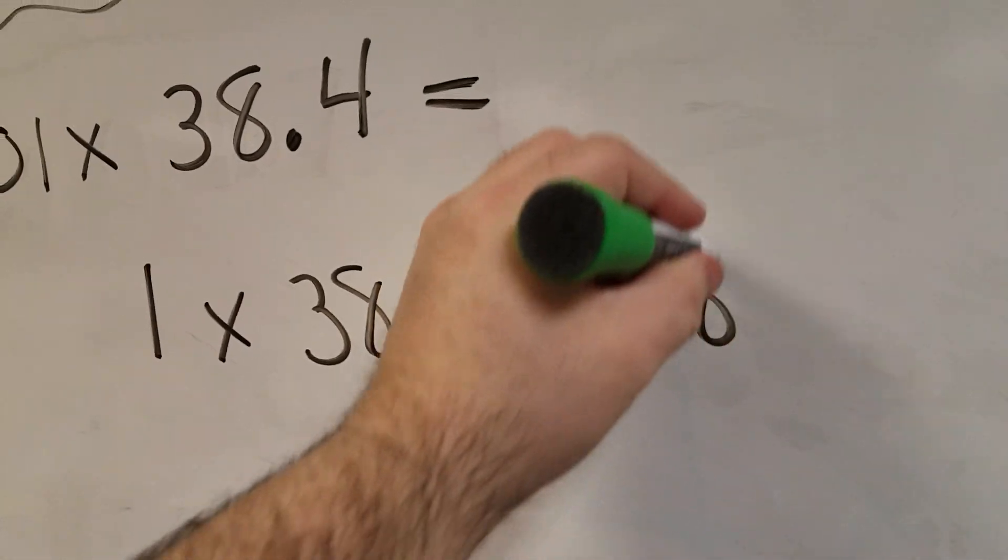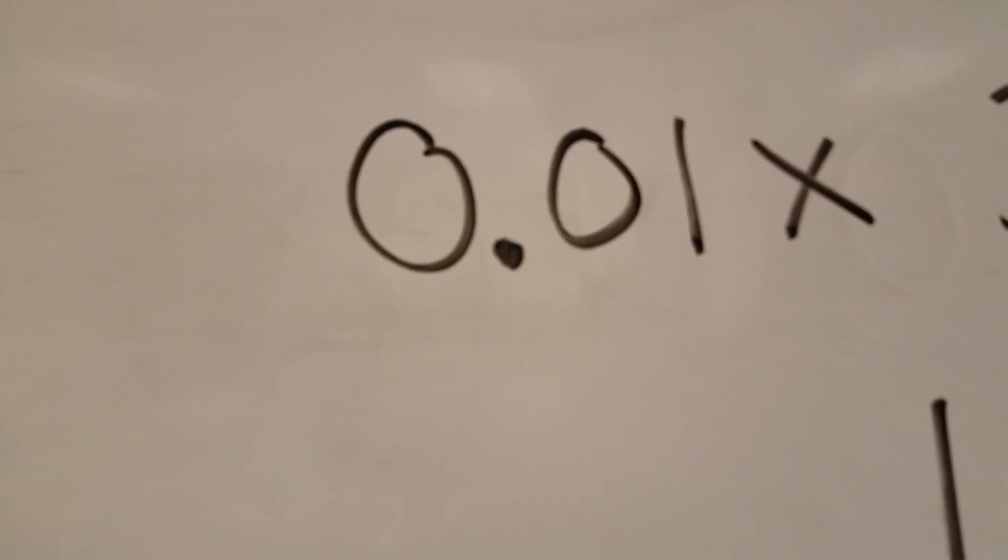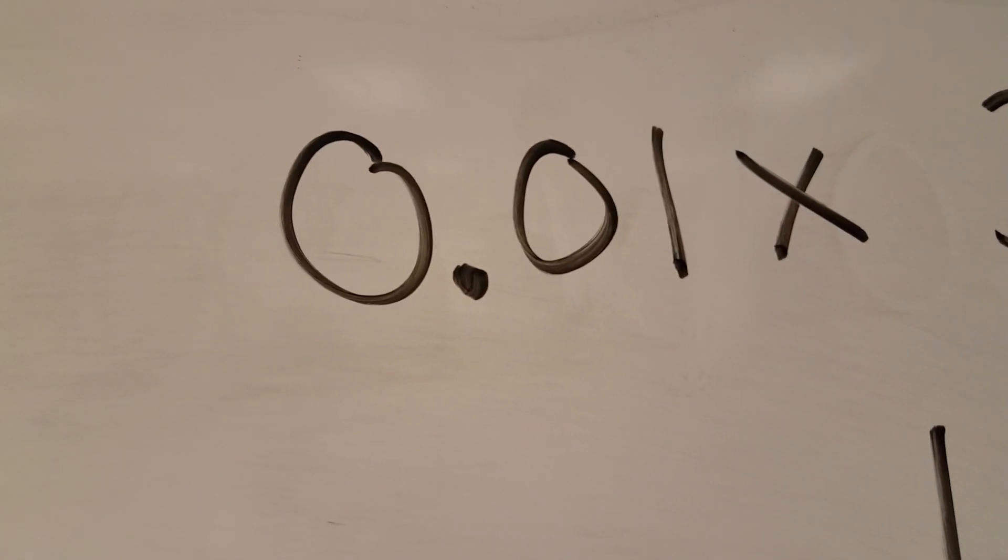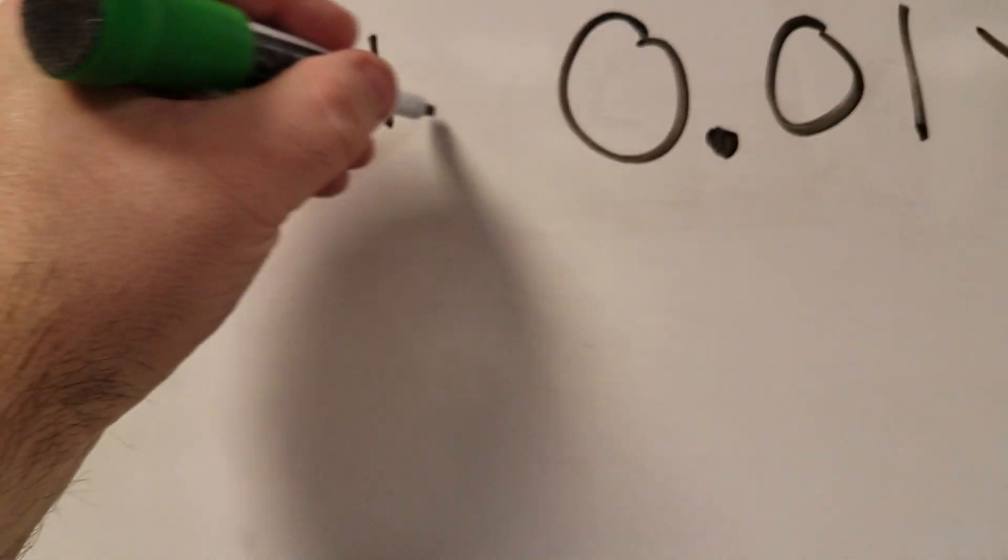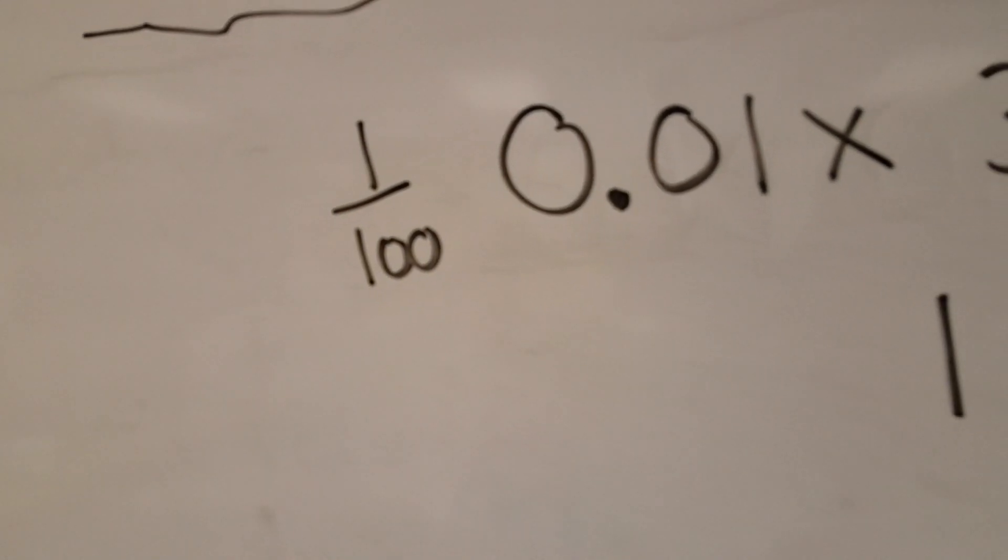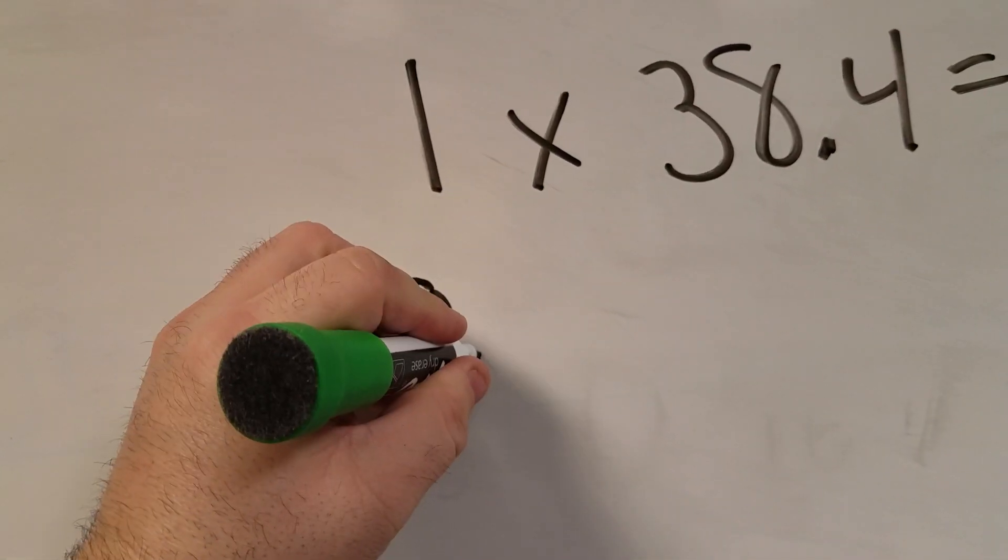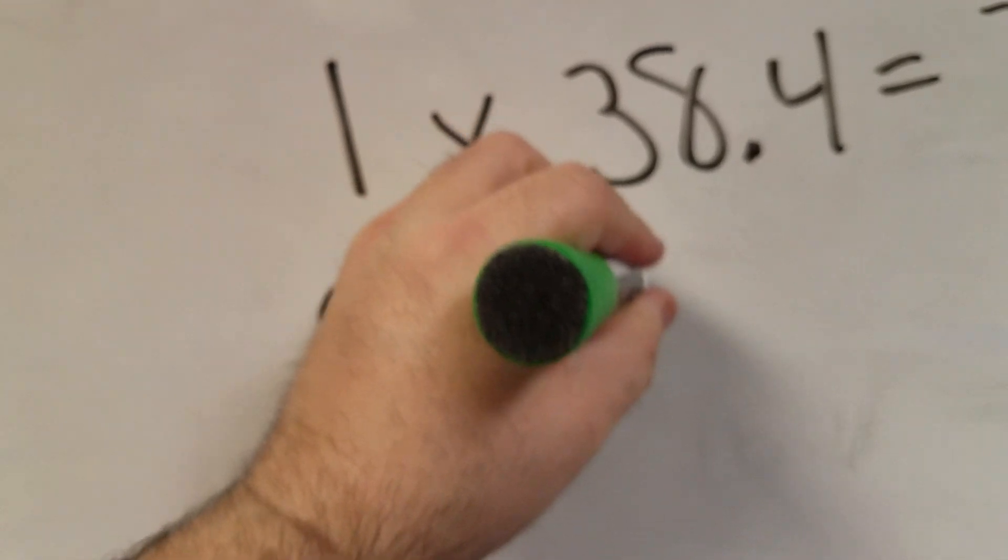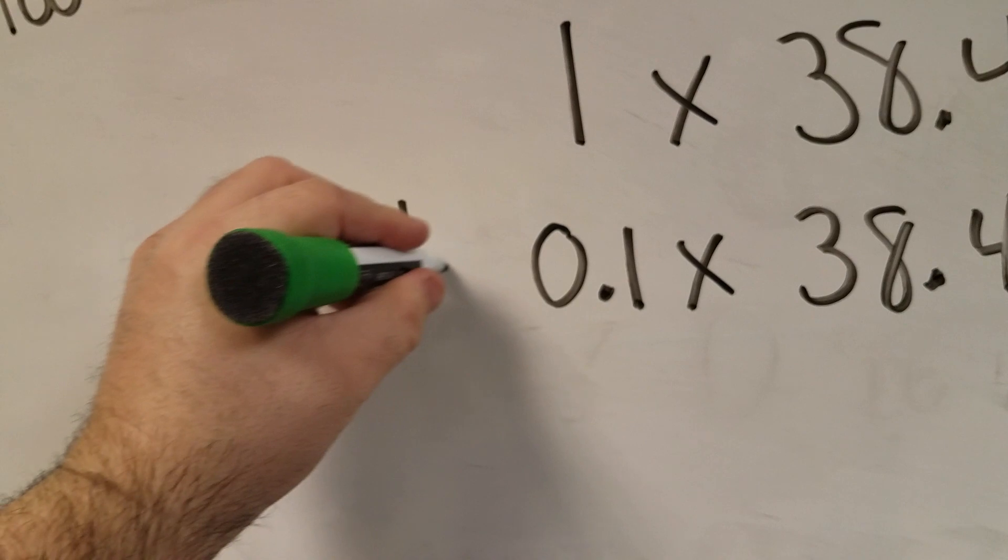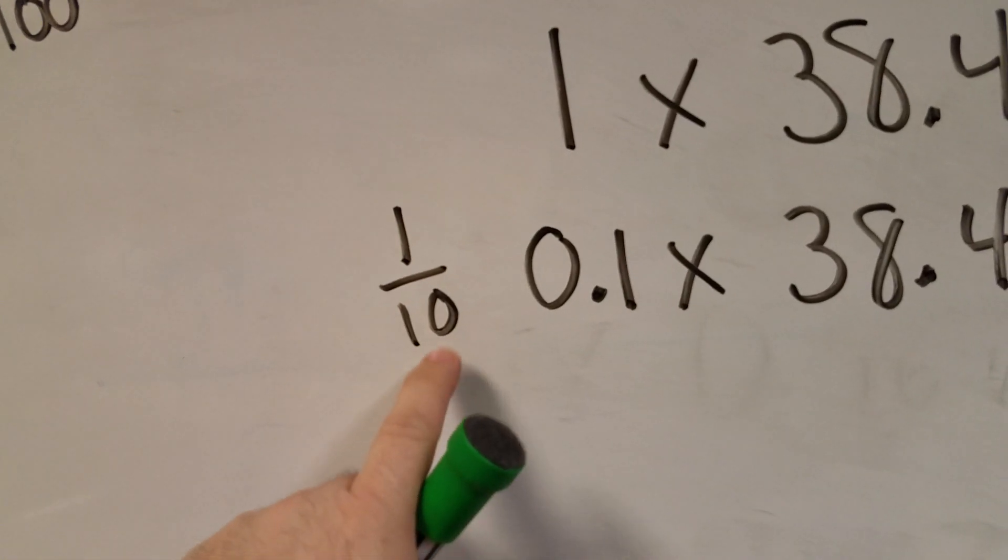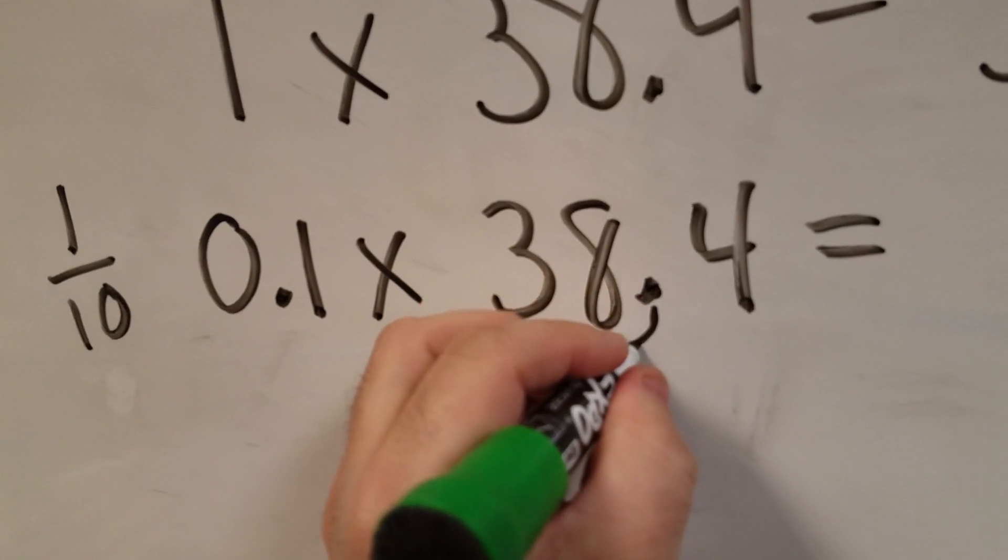Nothing happens to the decimal. It stays in its place. Now here, this is smaller than 1. That's 1 one-hundredth or 1 over 100, right? 1 one-hundredth. So keep that in mind, because first thing I'm going to do is say, well, what if I take 0.1 times 38.4? That means one-tenth. There's one-tenth of a power. So I'm going to move my decimal space 1 to the left.